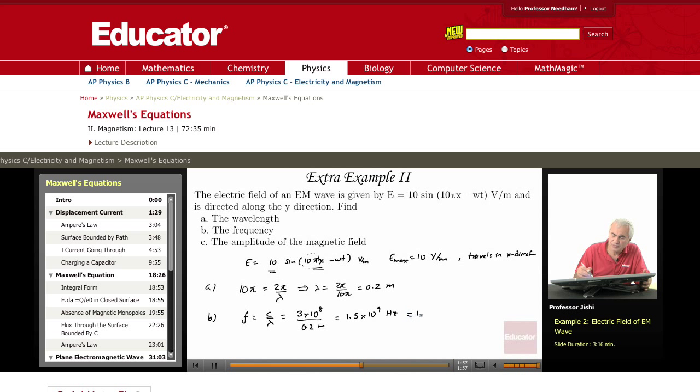So that's 1.5 times 10 to the 9 hertz. It's also called 1.5 gigahertz. This is the frequency, and this is like in a microwave sort of region.